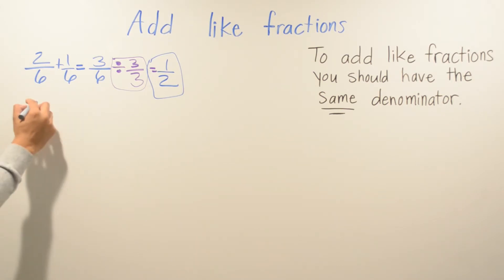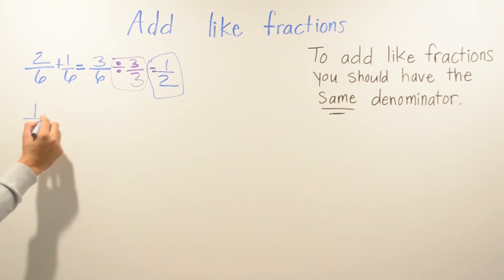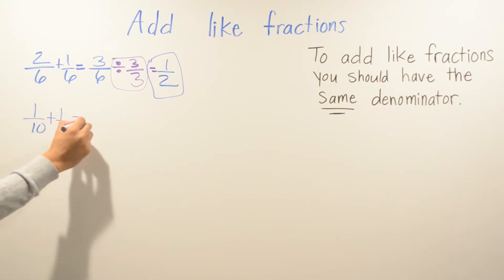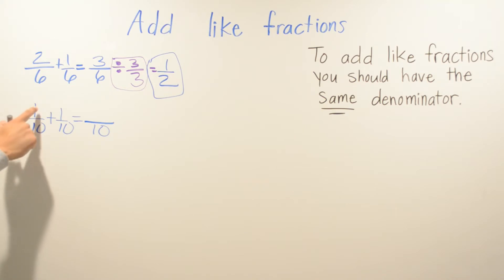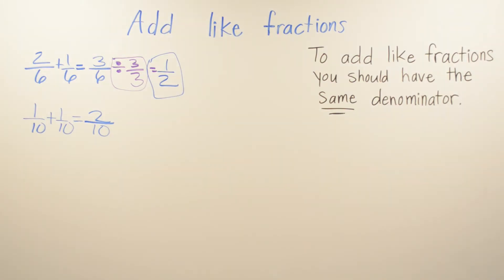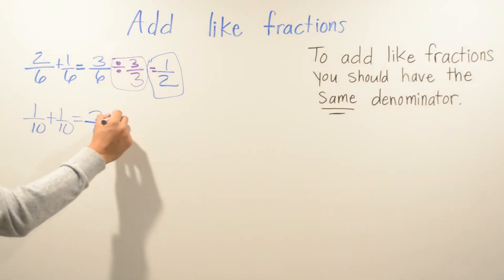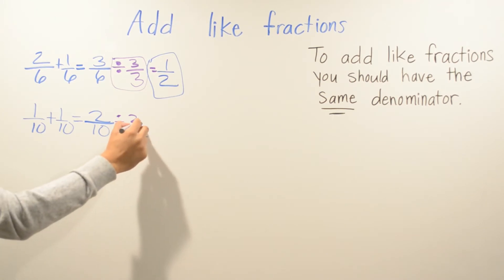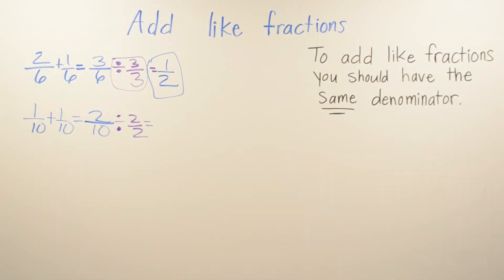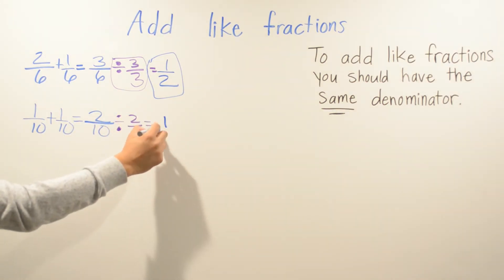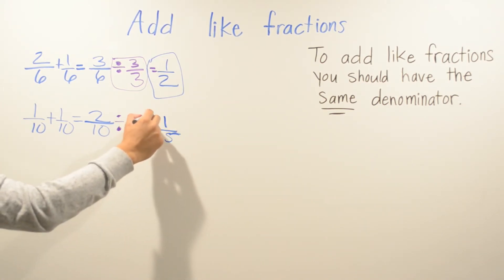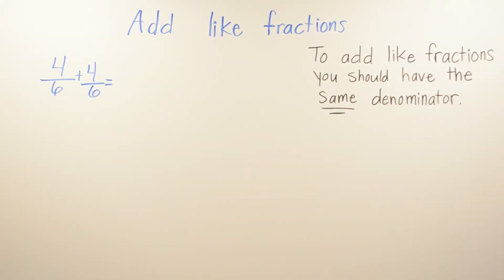Another example: 1/10 plus 1/10. The 10 does not change, so the denominator stays 10. Then 1 plus 1 is 2, so the answer is 2/10. They're both even numbers so we can simplify. We simplify by 2: 2 goes into 2 one time, and 2 goes into 10 five times, so your answer is 1/5.